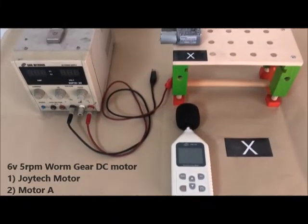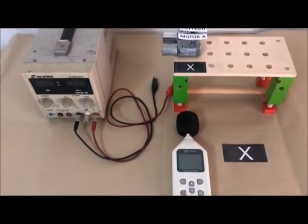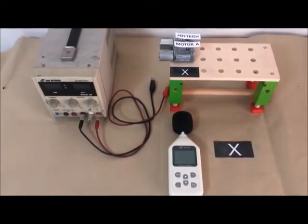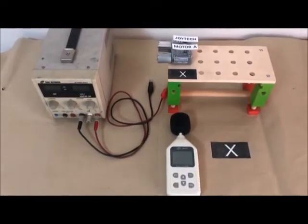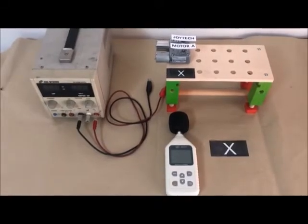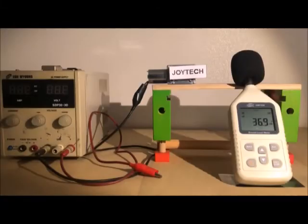Let's test the noise with digital sound level meter. We set the test environment. Black mark is the location where a motor or sound level meter should be. Before turning on the tester, we check the sound decibel in the room. It is 37 decibel.